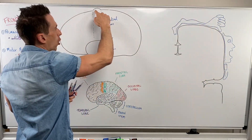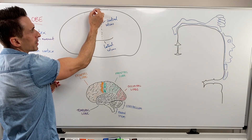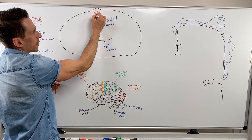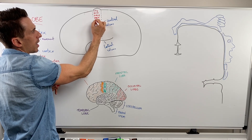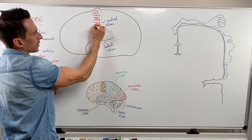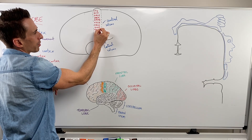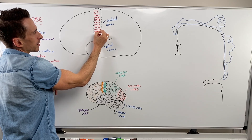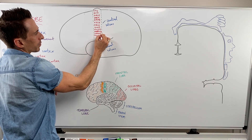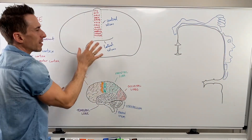If I were to translate this onto the brain, the foot is going to be a little bit around the corner, then the leg, the bum, the back, the arm, the hand, the neck, the face, the eyes, the mouth, the pharynx, the larynx, and the tongue — moving around like that. This is how the primary motor cortex is mapped.